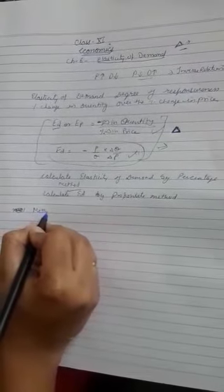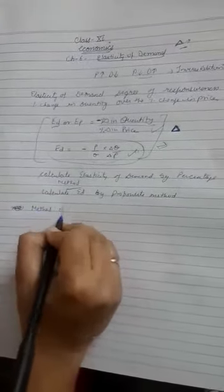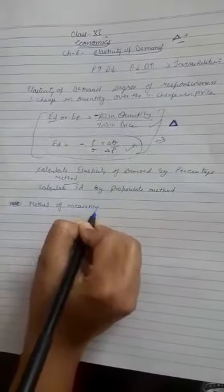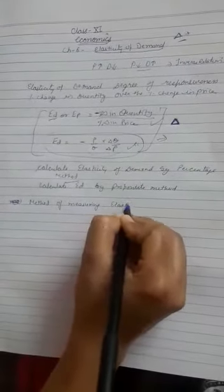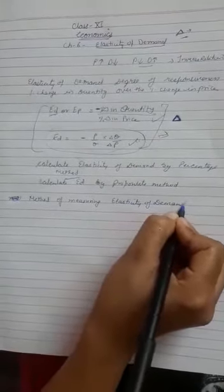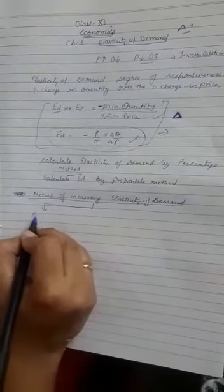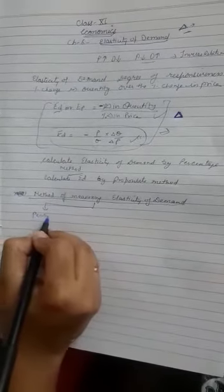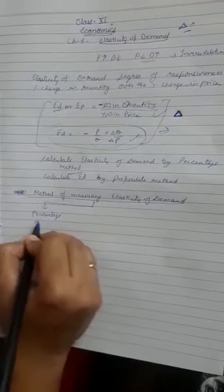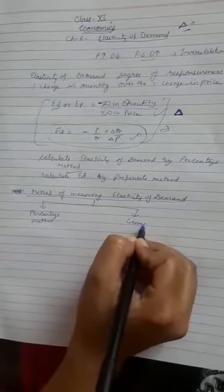The next topic is the method of measuring elasticity of demand. There are two methods of measuring elasticity of demand: one is the percentage method, and the second one is the geometric method.